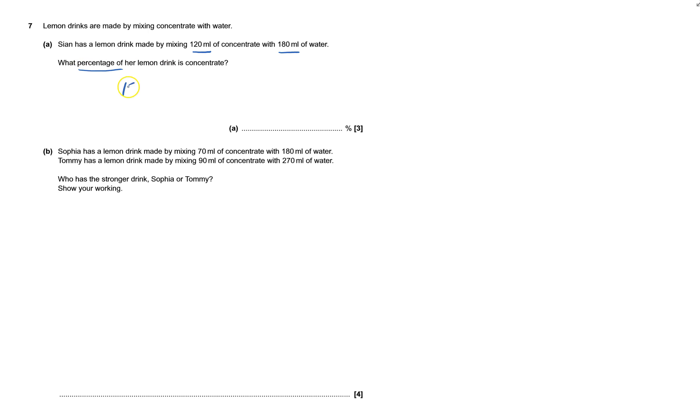What percentage of the lemon drink is concentrate? Well it's 120 millilitres out of the total amount of drink and that will be 120 plus 180, and that will be 300. So it's 120 out of 300 and we want percentage, so percentage is out of 100.